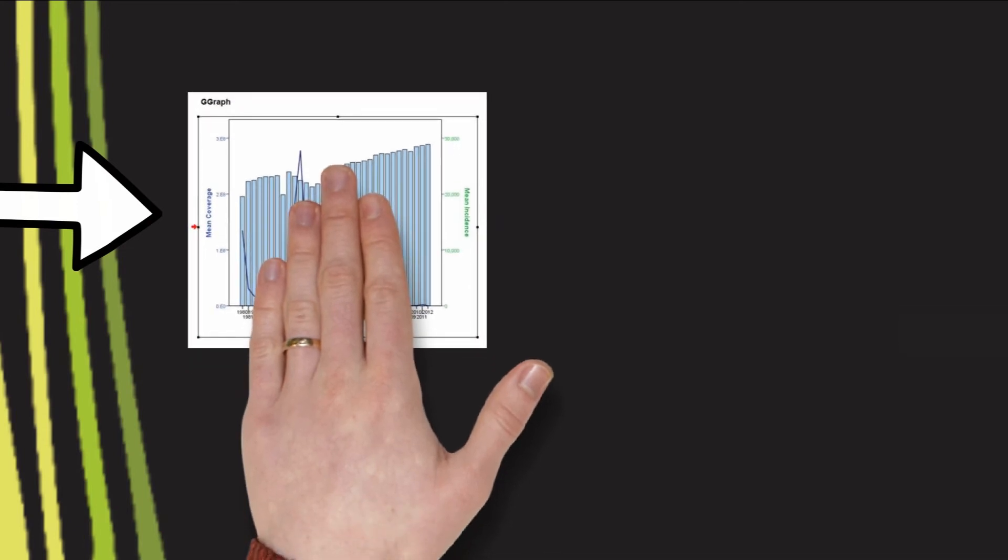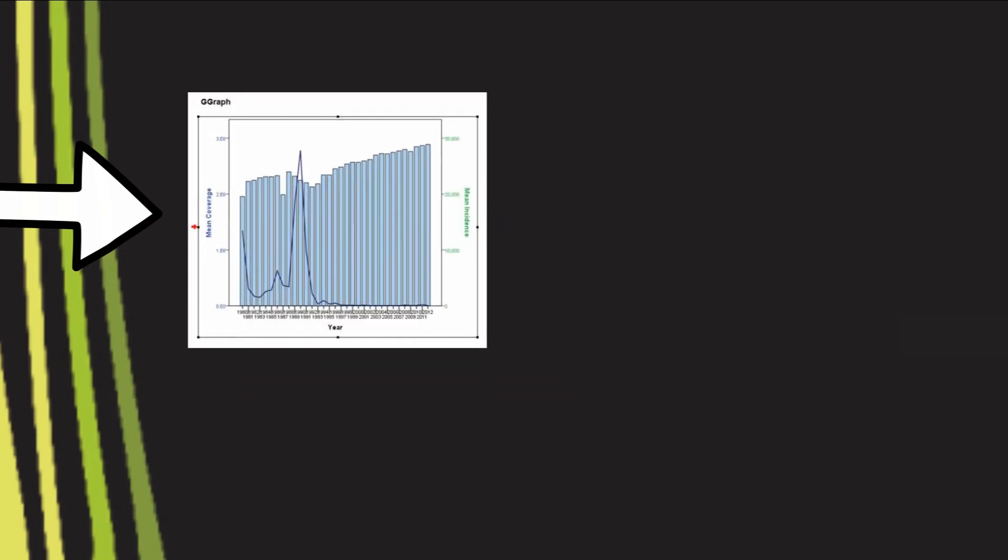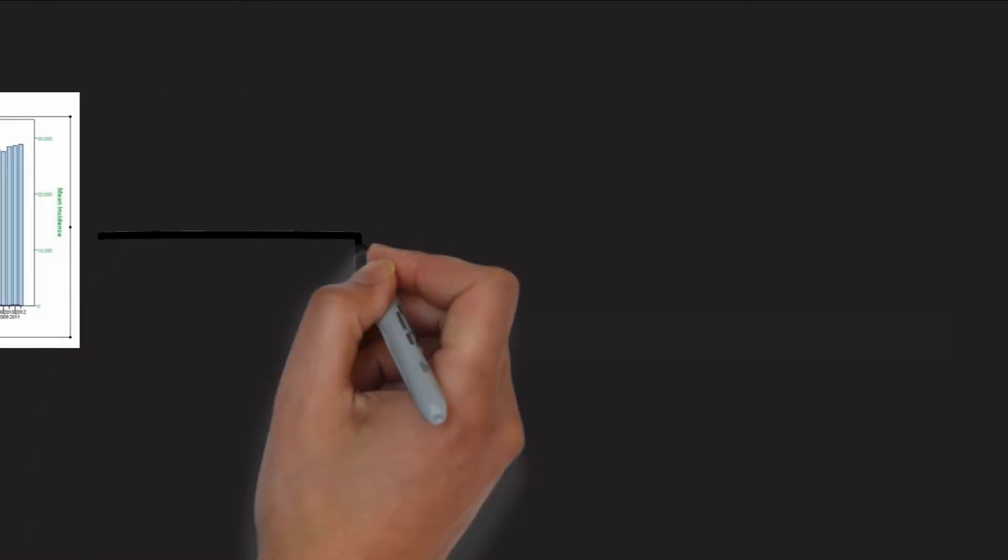This graph can give you a better image, which shows that the coverage for each year slowly increases, the incidence decreases, except for the extreme outlier. This is the general pattern for the United States.